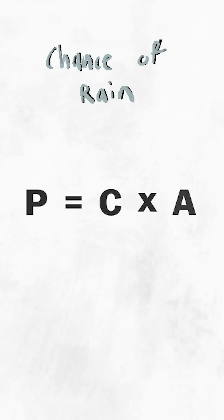When meteorologists calculate the chance of rain, they use the equation P equals C times A.